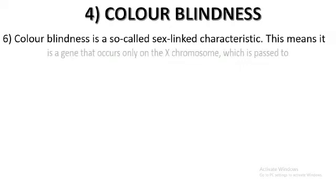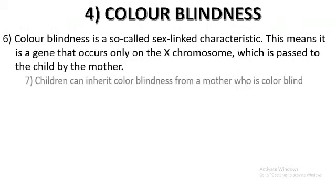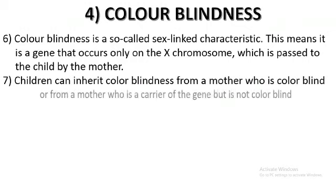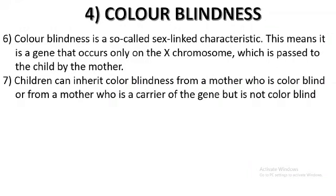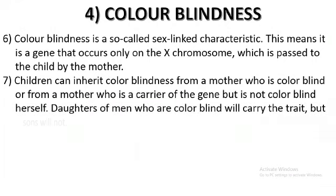Color blindness is present only on the X chromosome and is passed to sons by their mother. It follows a crisscross mode of inheritance, like hemophilia — a colorblind father passes the trait to his grandson via his daughter. Children can inherit color blindness from a colorblind mother or from a carrier mother. Daughters of colorblind men will carry the trait, but sons of colorblind fathers will not carry it.